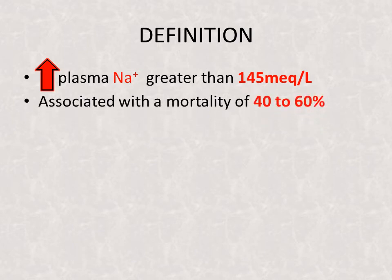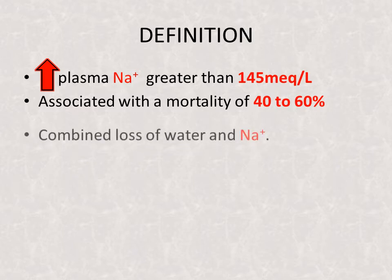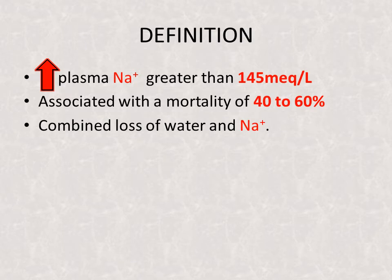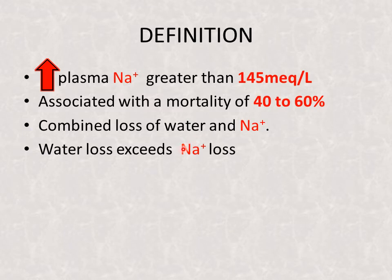Hypernatremia is associated with a mortality of 40 to 60 percent. Since the mortality rate is very high, it is necessary to treat it promptly. There is a combined loss of water and sodium, and the water loss exceeds the sodium loss.